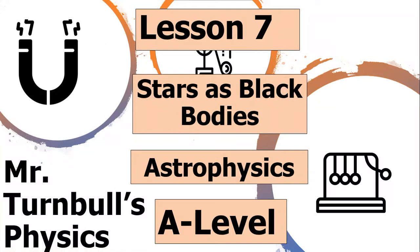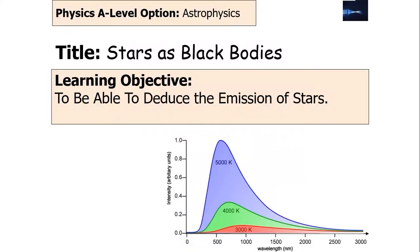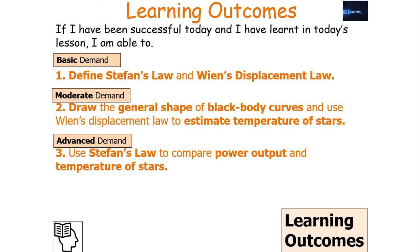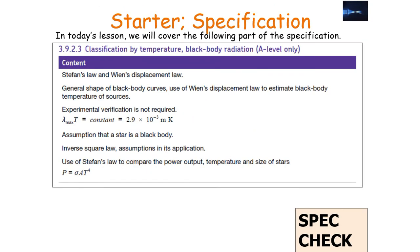Hello and welcome to today's lesson where we're going to look at stars as black bodies, which falls into the astrophysics option of the AQA A-level physics specification. In today's lesson we're going to try to deduce the emissions of stars by considering stars as black bodies, define Stefan's law and Wien's displacement law, draw the general shape of black body curves and use Wien's displacement law to estimate the temperature of stars, and finally use Stefan's law to compare the power output and temperatures of stars.